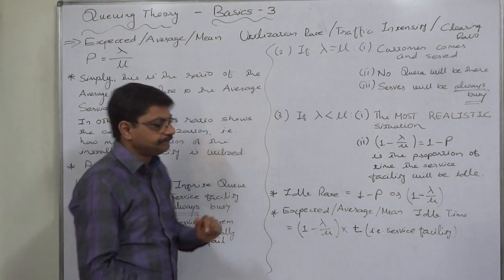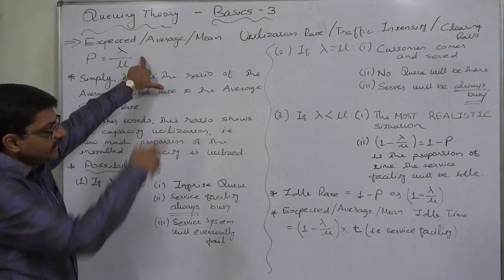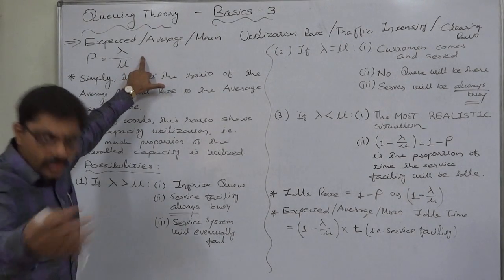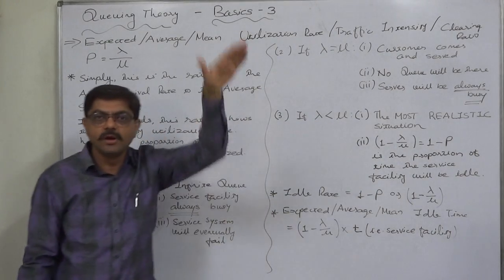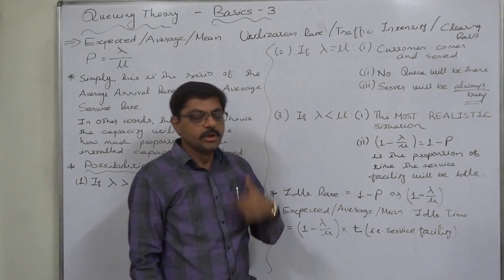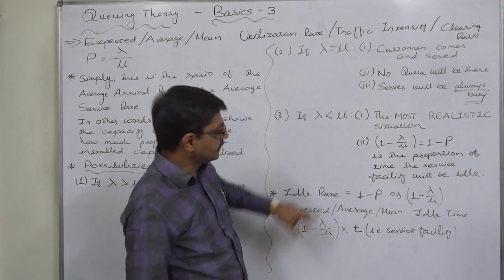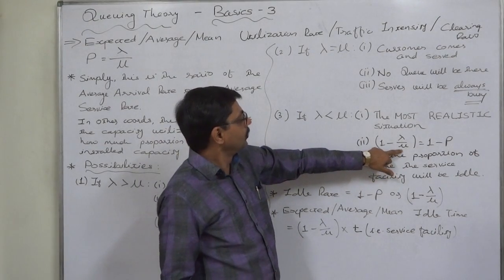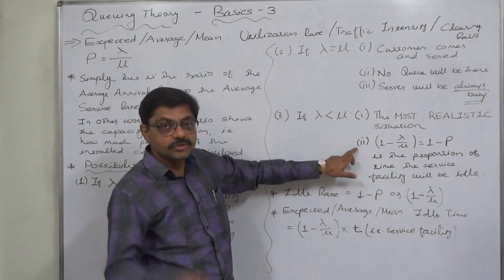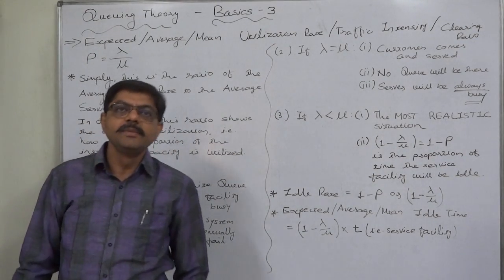The most realistic. And what is the effect? The utilization rate or traffic intensity or clearing ratio or capacity utilization, whatever we say, remains less than 1 or less than 100%. So now there is another possibility. If it is less than 100% what is the difference? 1 minus utilization ratio or utilization rate. That shows the proportion of time the service facility will be idle.